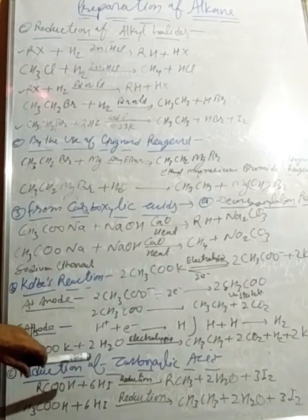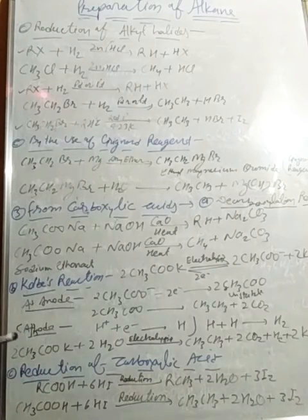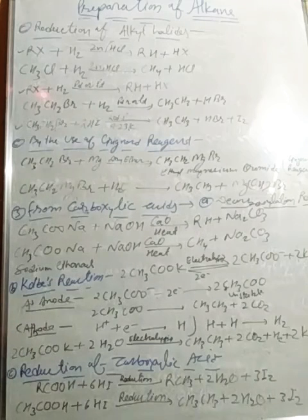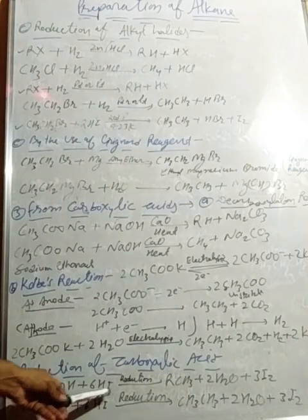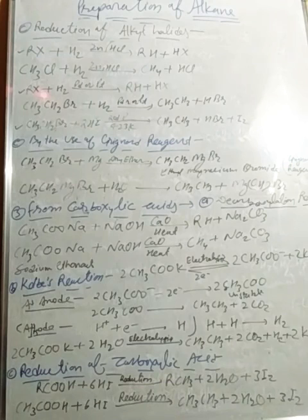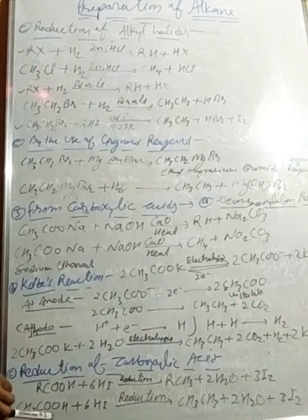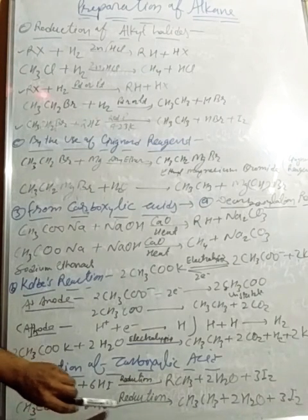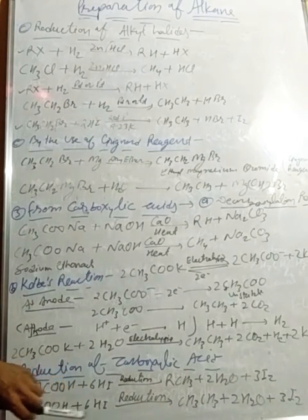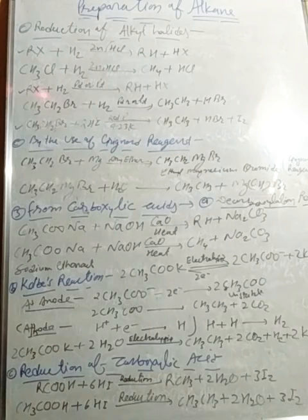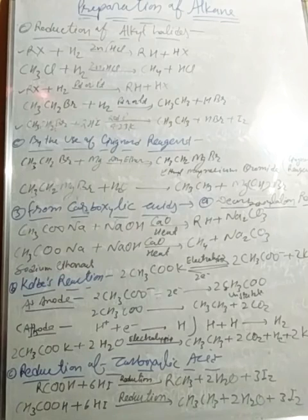The next method is reduction of carboxylic acids. On adding hydrogen to the carboxylic acid, alkane is formed. For example, RCOOH plus 6HI on reduction forms RCH₃ plus water and iodine. For instance, ethanoic acid gives ethane plus water.